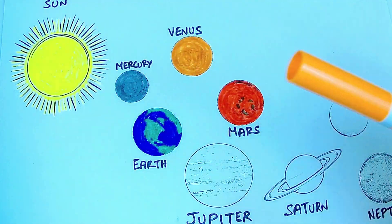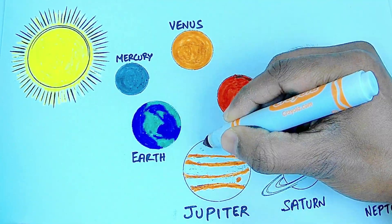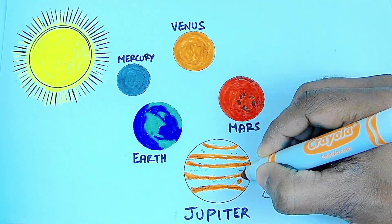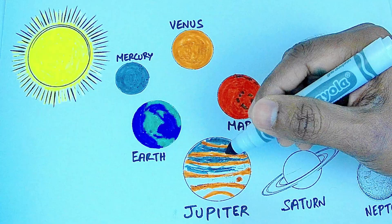Orange color Jupiter. It is the fifth planet from the Sun. It is the largest planet. It has eighty moons.